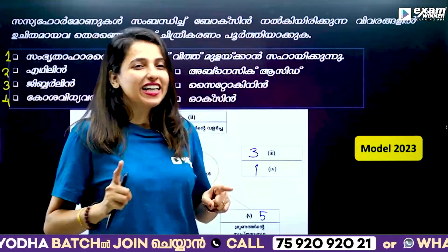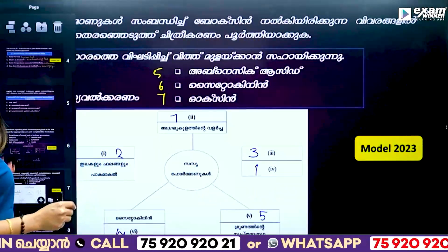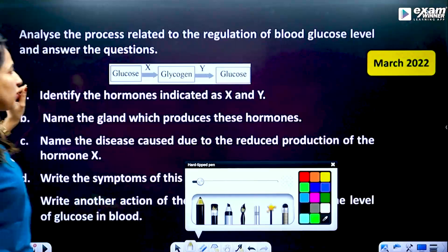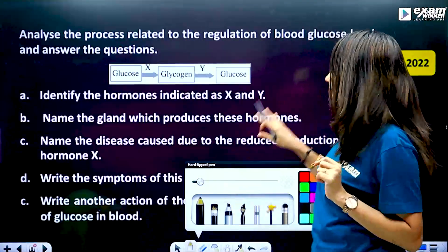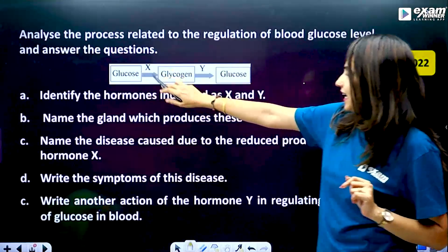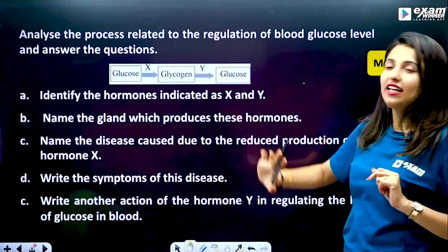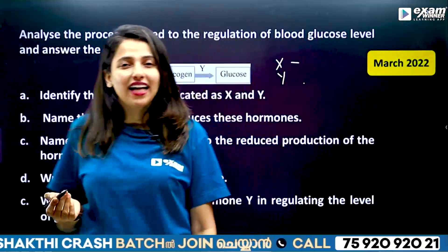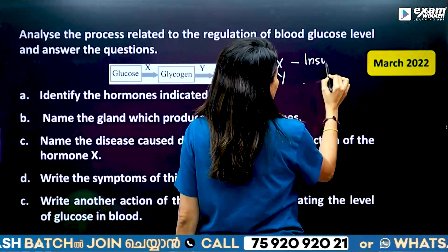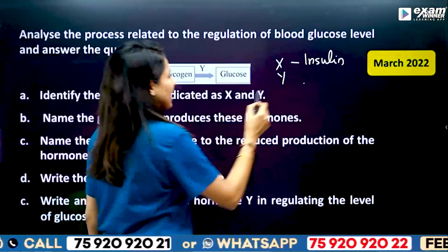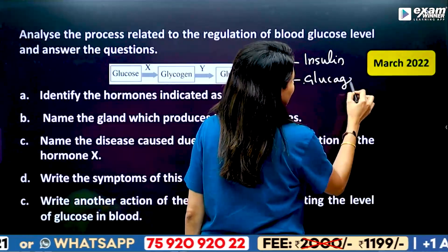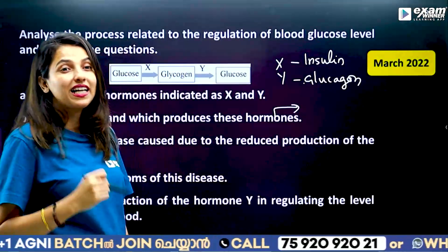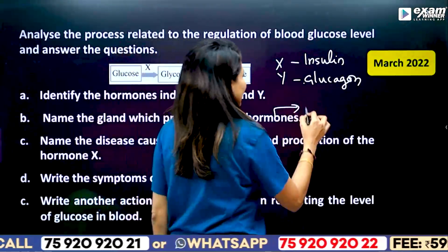Let's analyze the process related to the regulation of blood glucose level. We have a flow chart for glucose. Glucose converts to glycogen — that hormone is Insulin. Then glycogen converts back to glucose — the symbol is Glucagon. X and Y have a mark set. Name the gland which produces these hormones — the gland is the Pancreas.